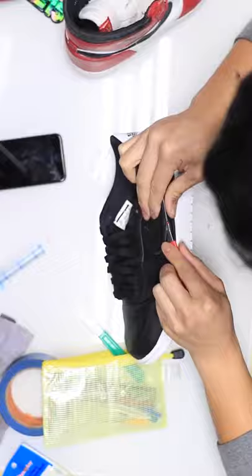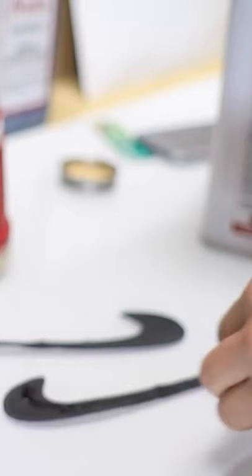So the Cyber Monday low top Ones are going to be our swoosh donors, and I'm going to be doing the same process that I've done by removing the swoosh using a seam ripper. Now we're just going to glue the swooshes in place and after that we are done.